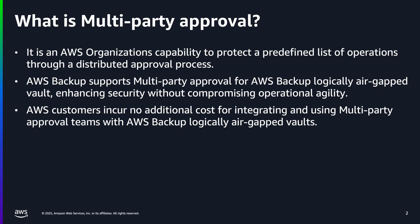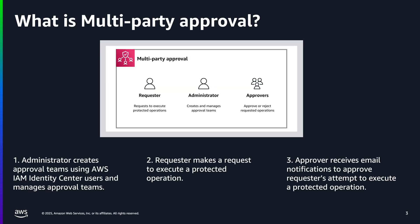AWS customers incur no additional cost for integrating and using Multi-Party Approval teams with AWS Backup Logically Air Gap Vaults. Let's briefly talk about each job function in the Multi-Party Approval process. First, the administrator creates approval teams by inviting AWS IAM Identity Center users. Administrators also manage approval teams by requesting team updates or deleting a team. And once all approvers accept the invitation, the team becomes active.